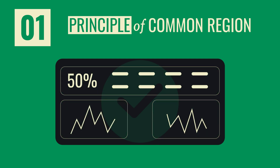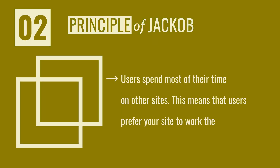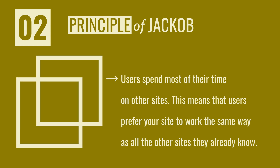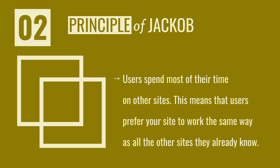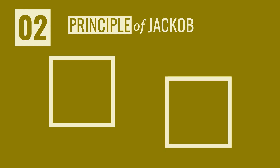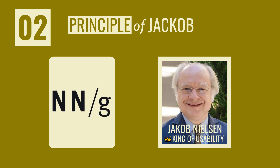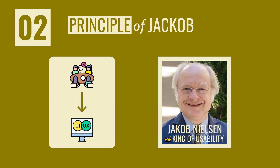Now let's see principle number two. The principle of Jakob's Law states that users spend most of their time on other sites, which means that users prefer your site to work the same way as all the other sites they already know. This principle was first introduced by Jakob Nielsen, called the king of usability. He's a user advocate and principal of the Nielsen Norman Group, which spends a lot of resources on research for UX and UI on the web.